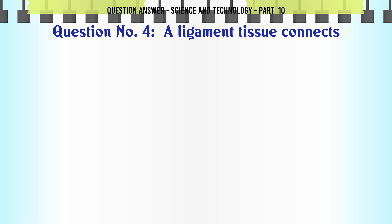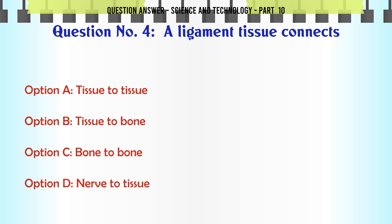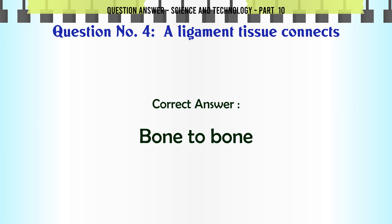A ligament tissue connects. A. Tissue to tissue. B. Tissue to bone. C. Bone to bone. D. Nerve to tissue. The correct answer is Bone to bone.